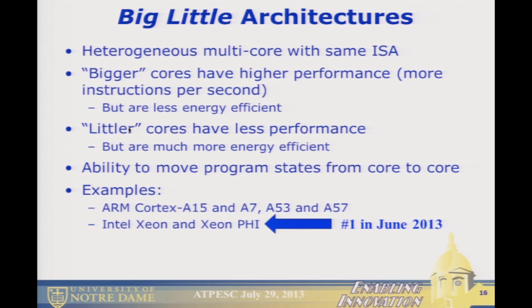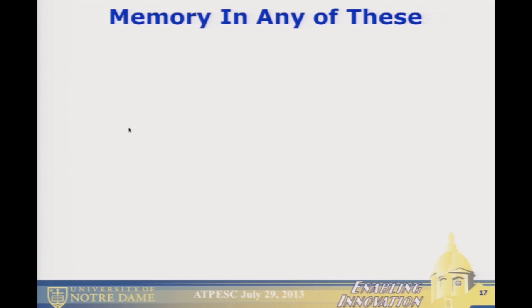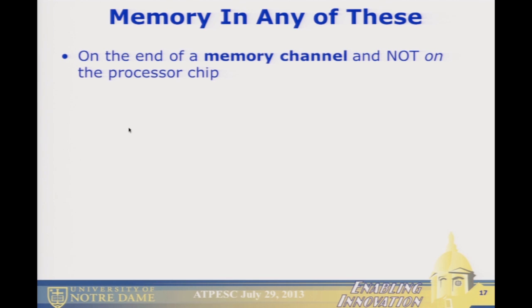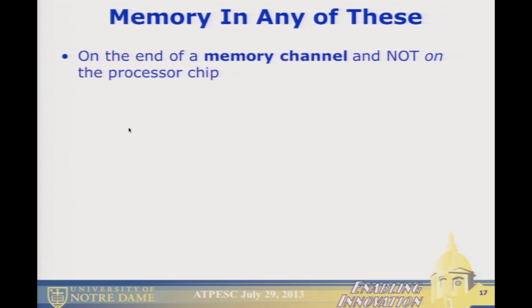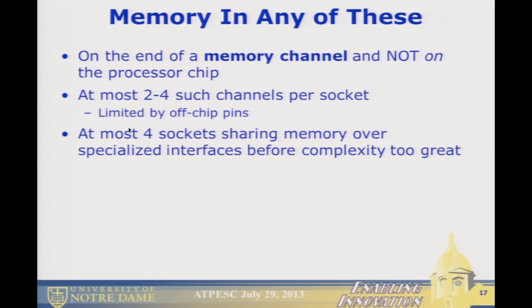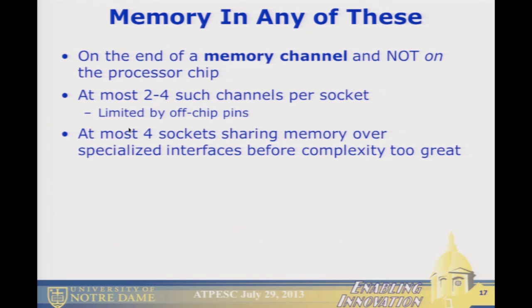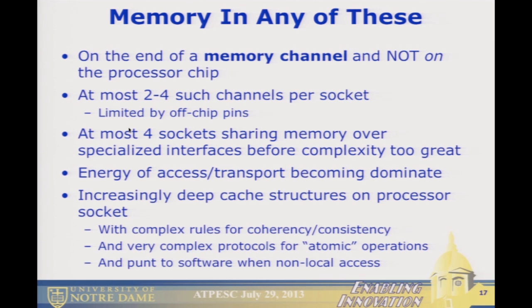In any of these architectures, memory is positioned at the end of a memory channel and not on the processor chip. At most there are two to four channels per socket, and at most four sockets can share memory in a cache-coherent way before the complexity — N-squared versus N-log-N — becomes too great. The energy of access and transport becomes dominating, and this increasingly deep cache structure makes remote atomic operations really nasty to try to do.